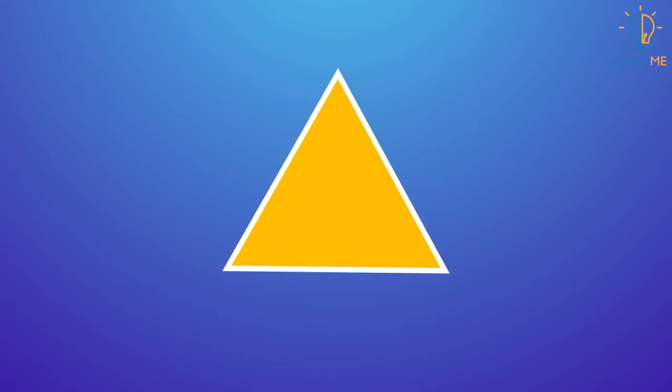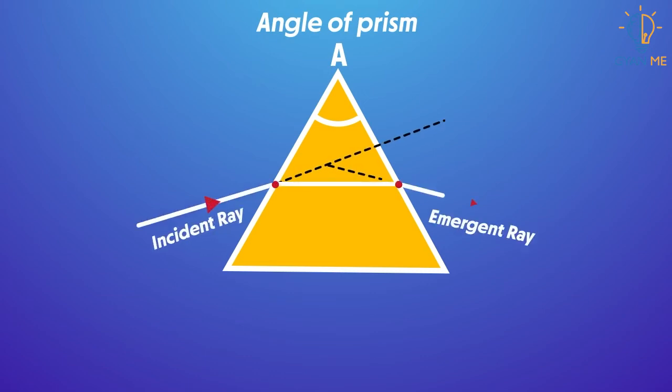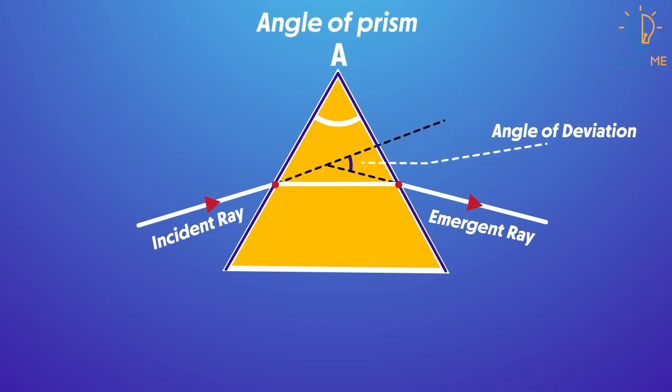This angle is the prism angle denoted by A. This angle determines the amount of bending that will happen to the light when it passes through it. The angle is formed by two lateral faces. These two lateral faces are from where the light enters the prism and from where the light goes out after refraction.